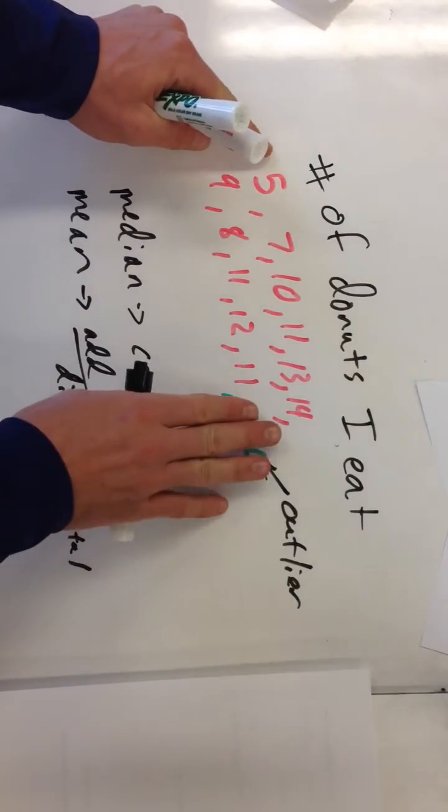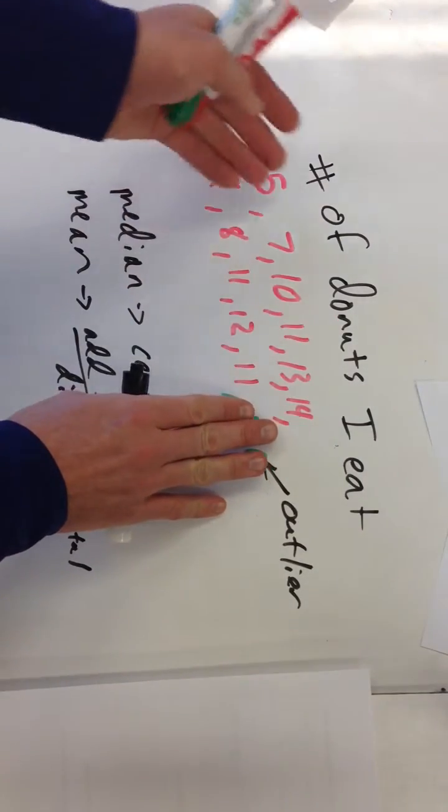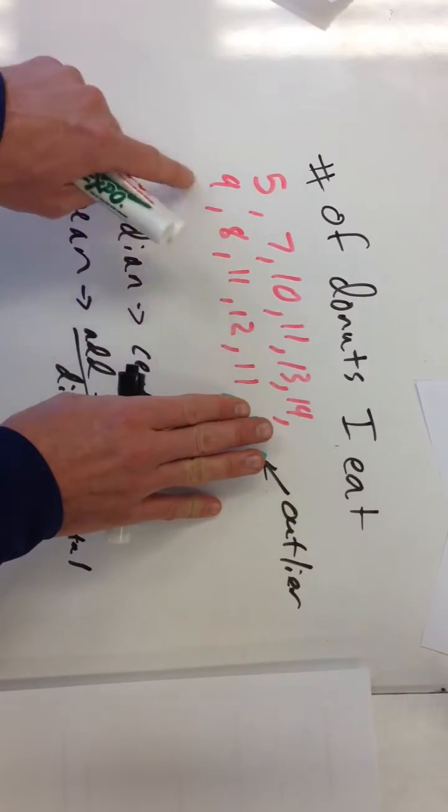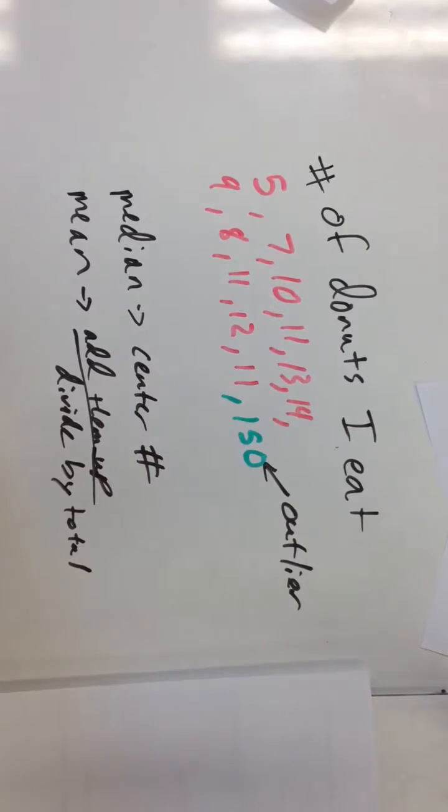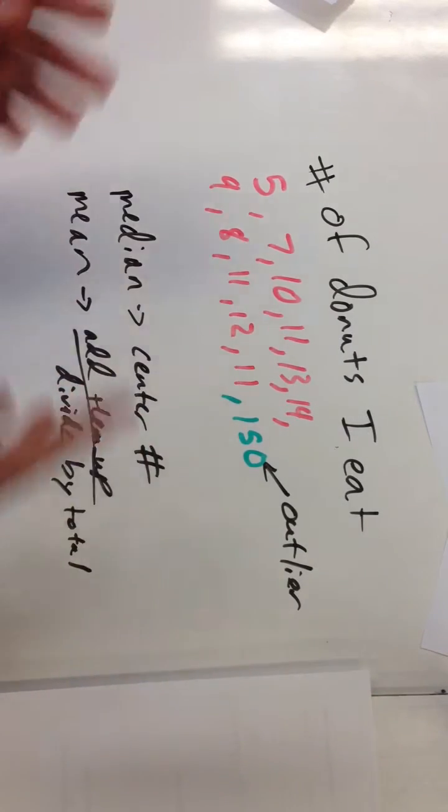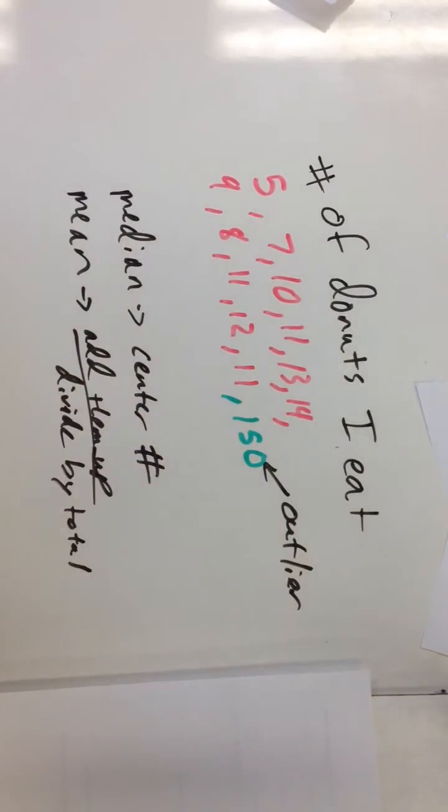Try finding the mean by adding all these up and dividing by, let's see, 1, 2, 3, 4, 5, 6, 7, 8, 9, 10, 11. Try adding those up and dividing by 11. Now add that number in and divide by 12 and see which one's higher. You'll see that 150 really affects it.